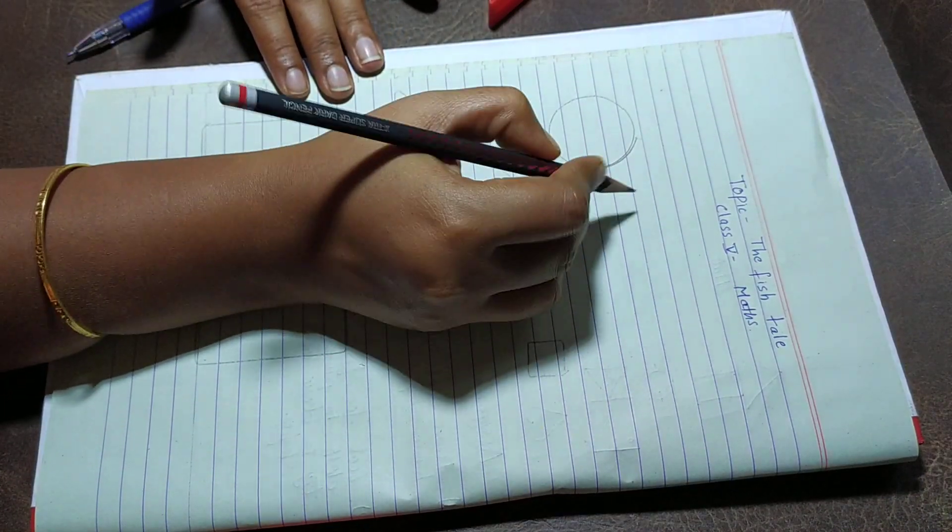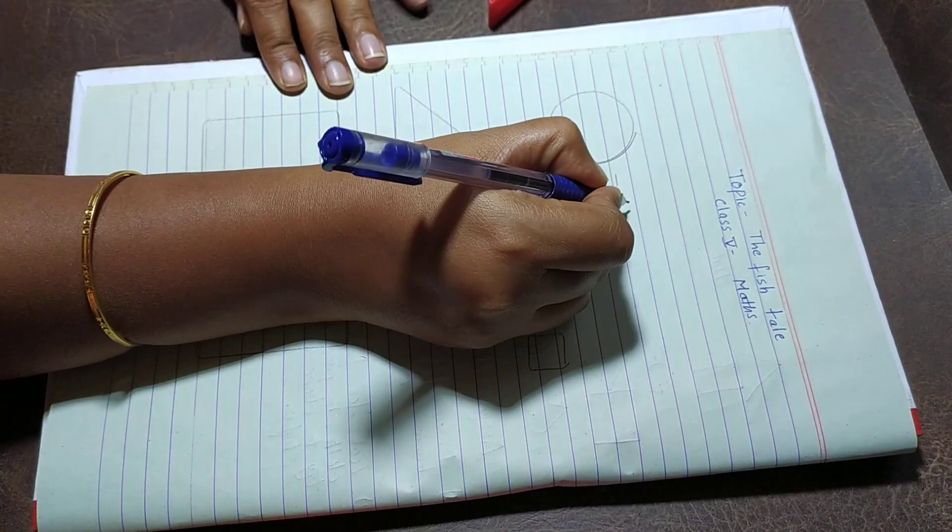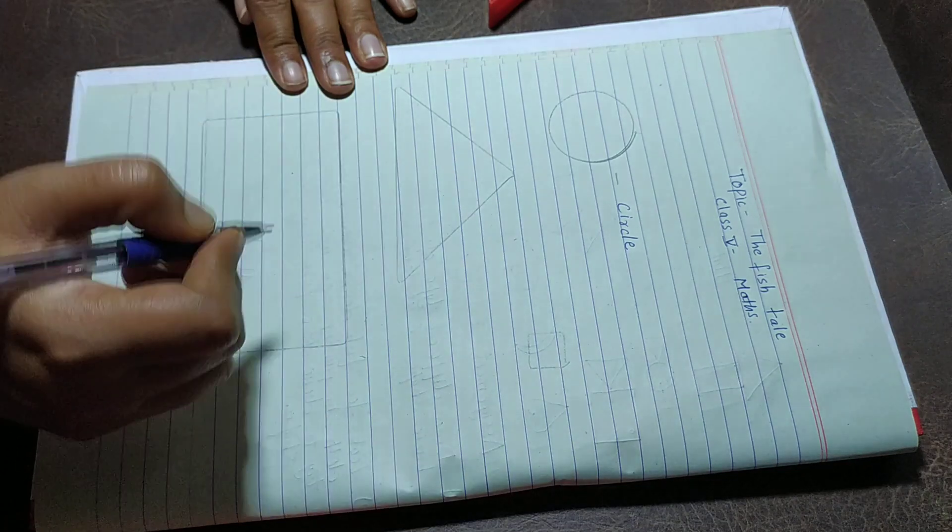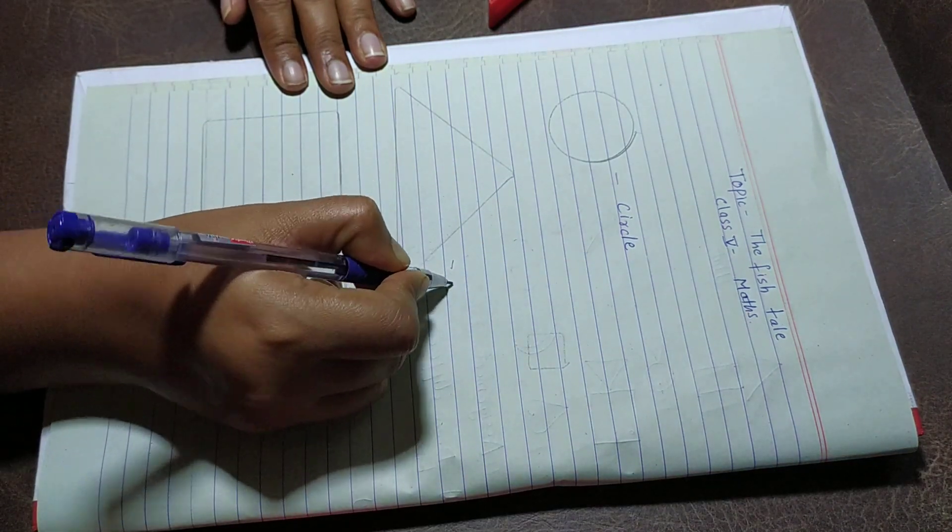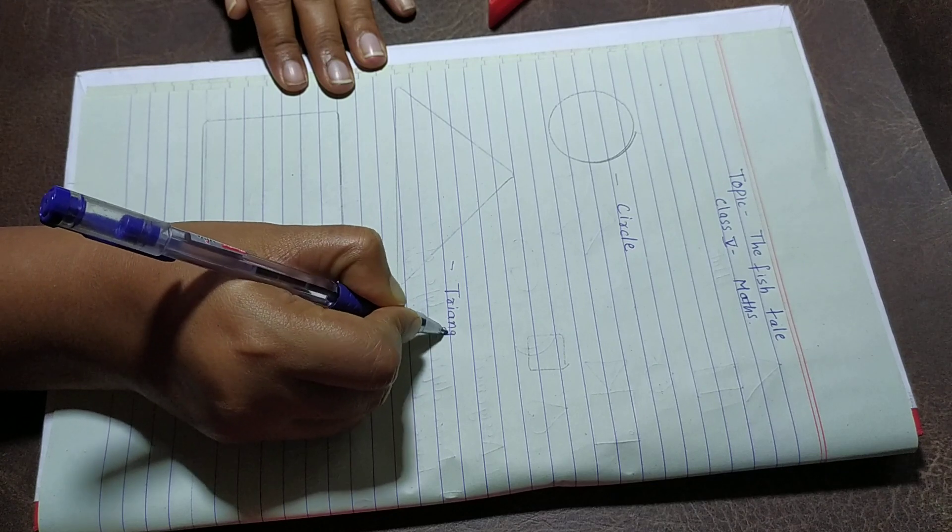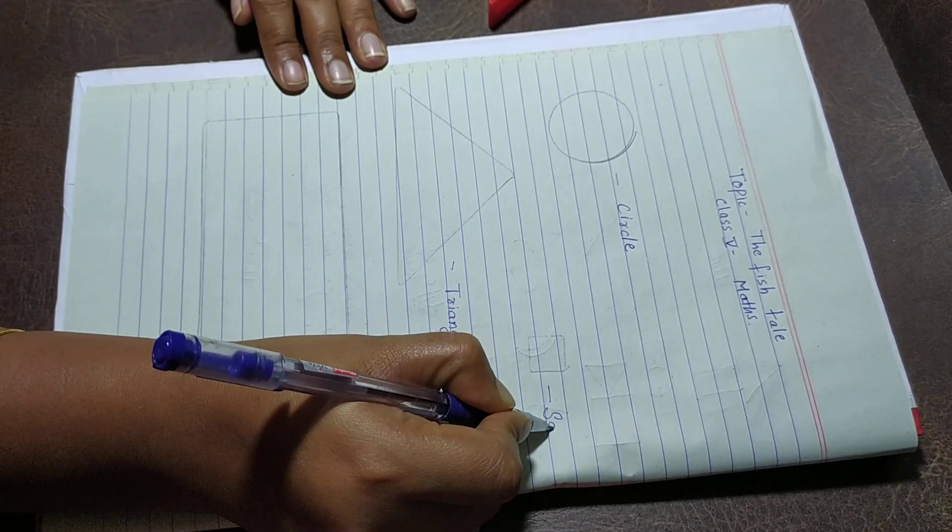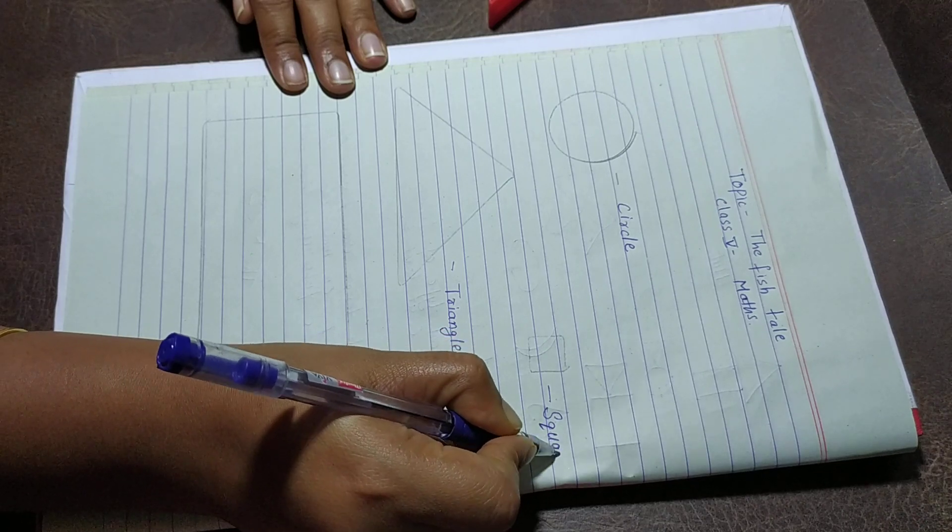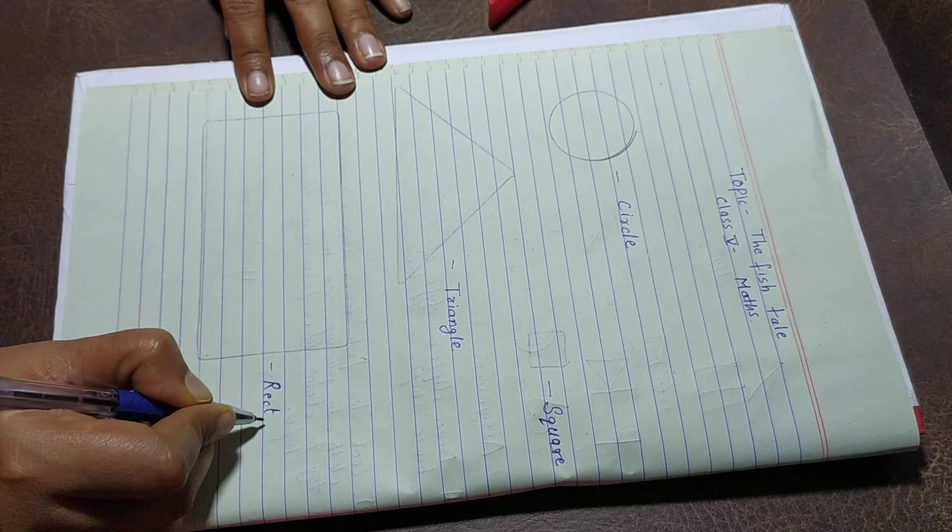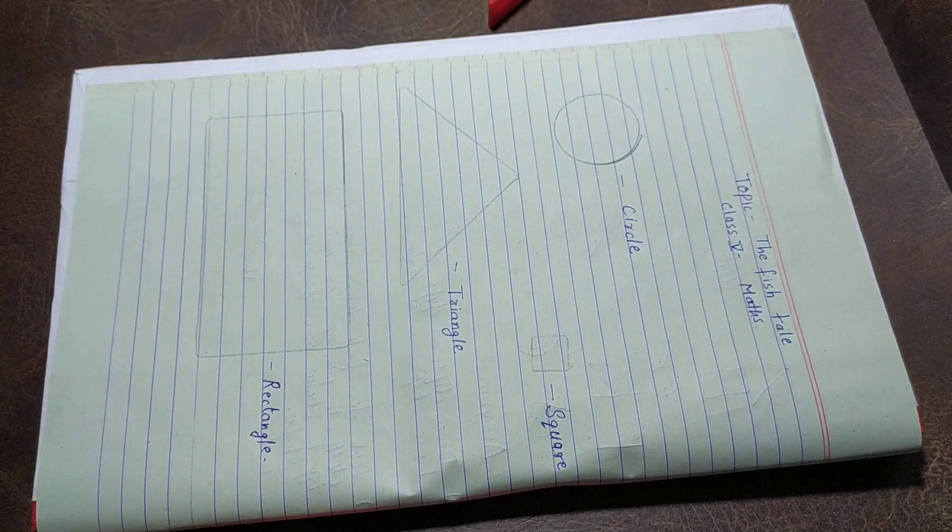What is the name of this shape? Yes, circle. This is triangle, and this is square, and this is rectangle.